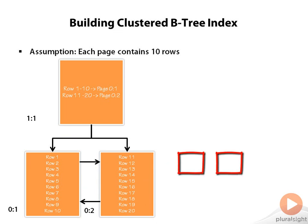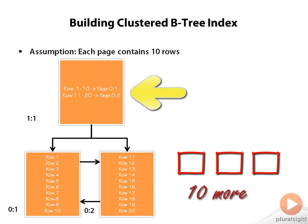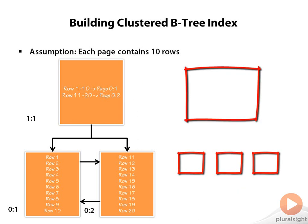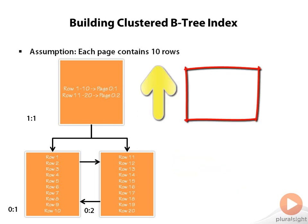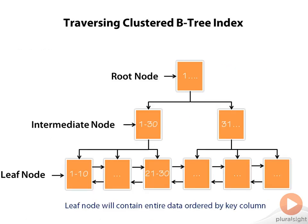If we have 10 more pages, this entire page at level 1,1 will be filled. In that scenario, we will need another page and one more page on top of it to maintain all the entries, and that will bring us to this kind of structure. In this example, we have leaf nodes which contain data and a pointer to the next page, intermediate nodes which have a pointer to the leaf node, and a root node which has a pointer to the intermediate nodes.